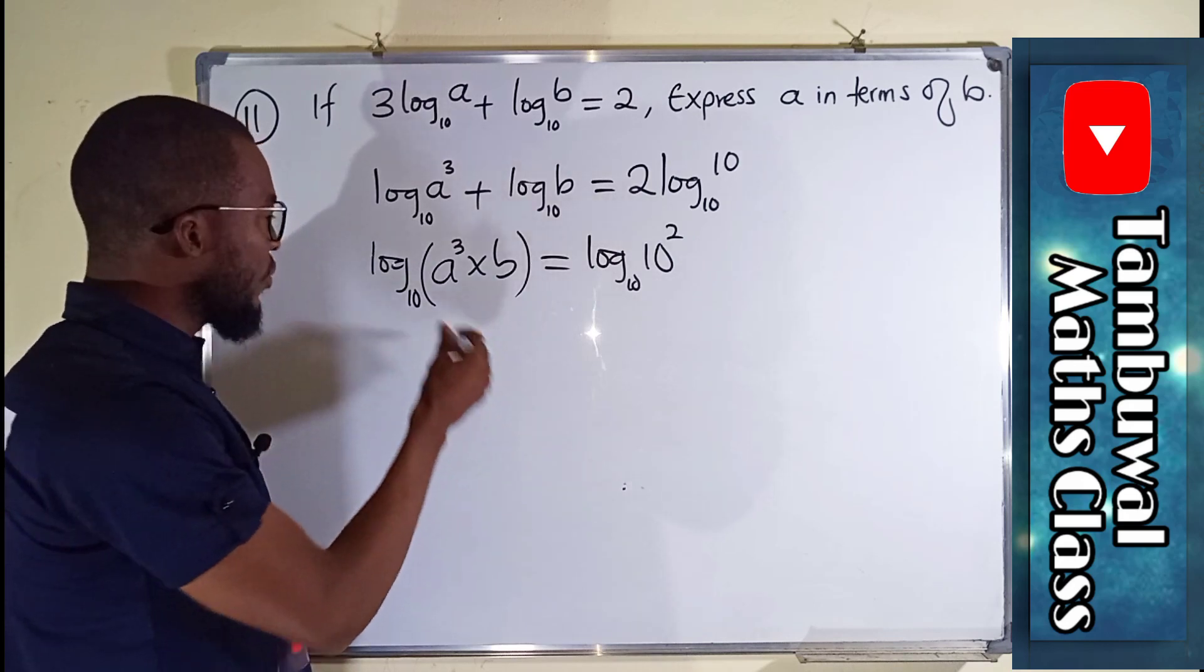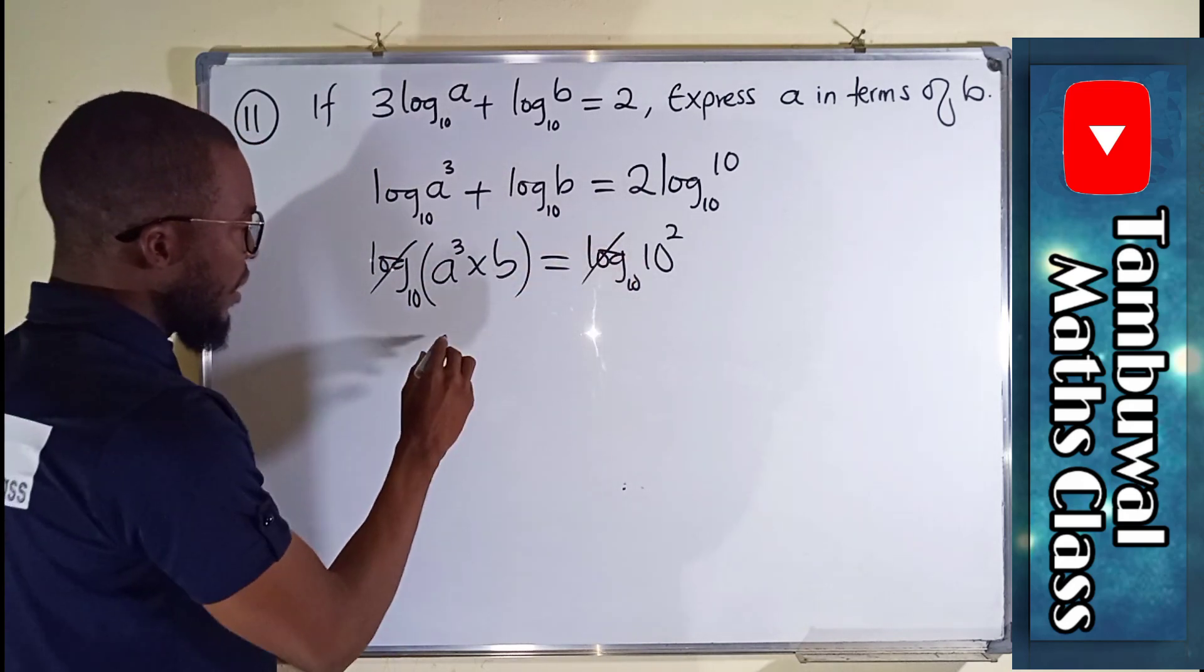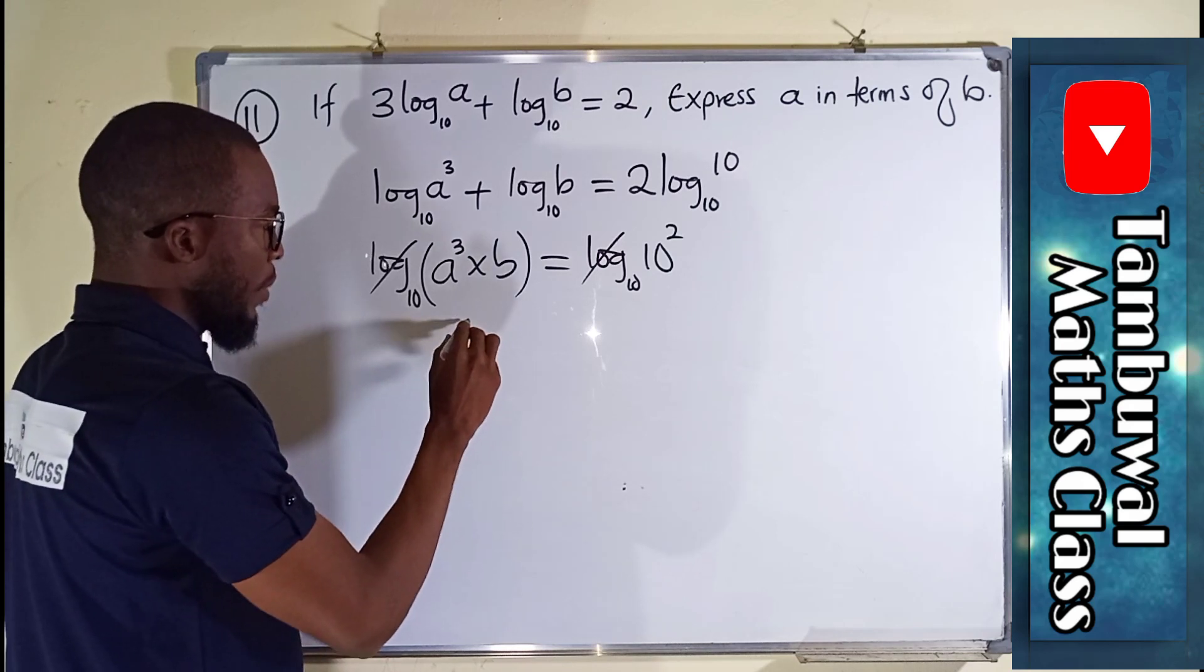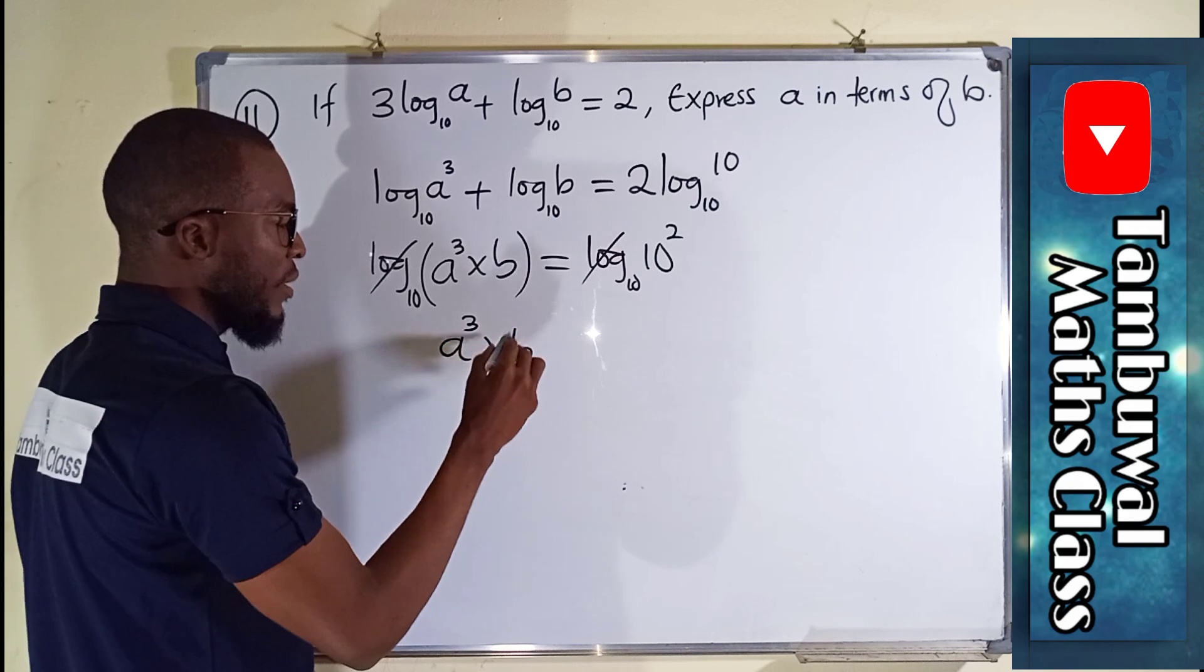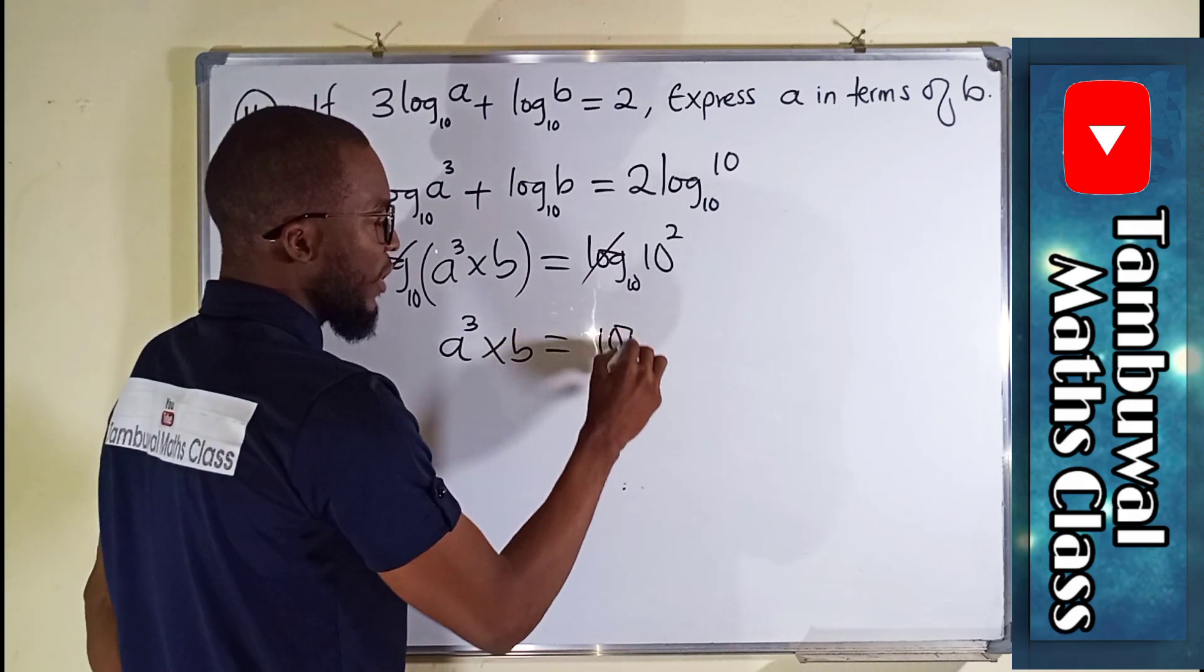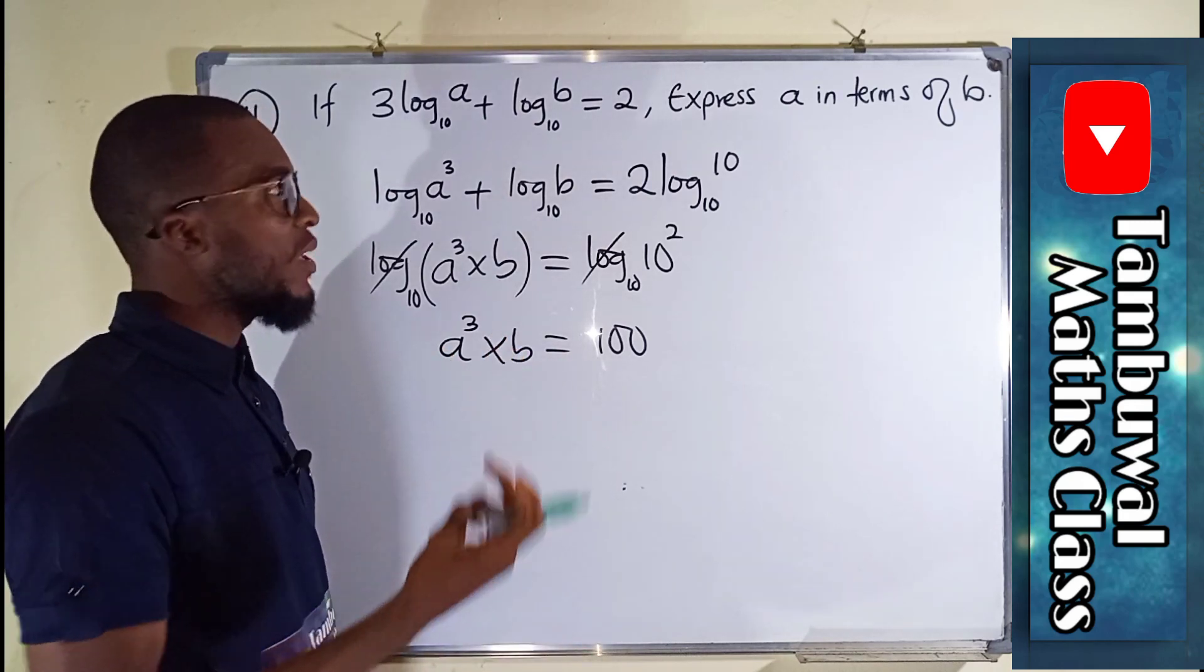From left to right we have common logs so they can cancel out, leaving only these terms. This is A³ multiplied by B to be equal to 100 because 10² is 100, is the same thing as saying 10 times 10.